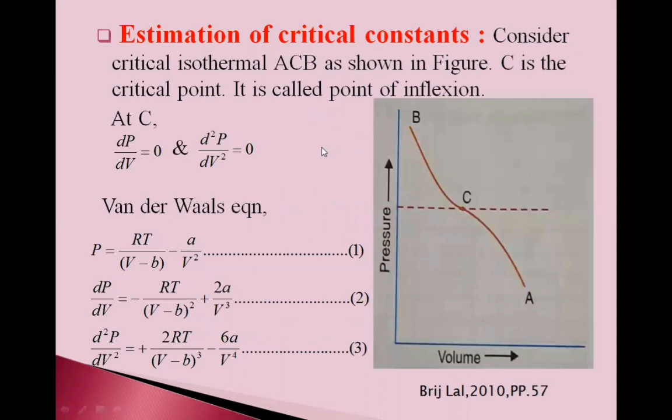Now friends, see this figure. In this figure, critical isothermal ACB is shown. Here, pressure and here, volume. So, this is ACB isothermal. C is critical point. It is also called point of inflection.